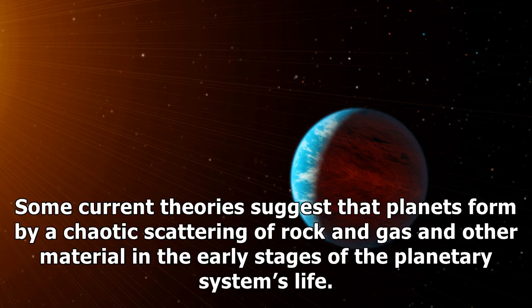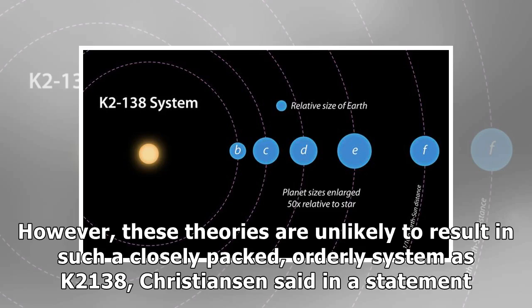Some current theories suggest that planets form by a chaotic scattering of rock and gas and other material in the early stages of the planetary system's life. However, these theories are unlikely to result in such a closely-packed, orderly system as K2-138, Christiansen said in a statement.